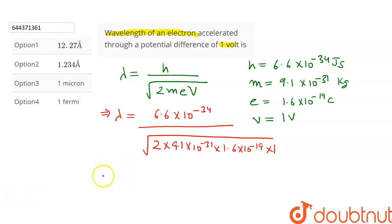Let's solve this equation. And after solving, we get lambda is equal to 12.27 into 10 raised to the power minus 10 meters. This can also be written as 12.27 angstrom.